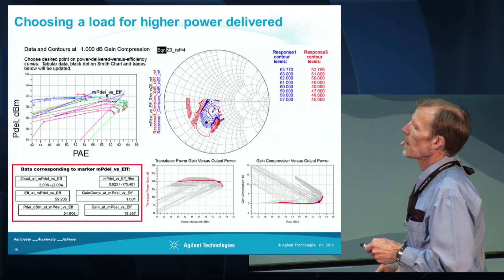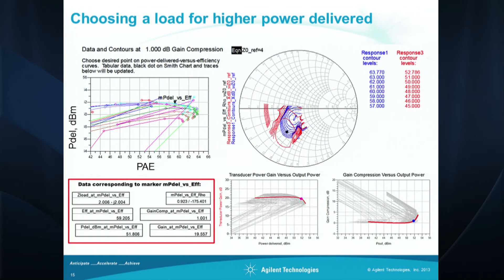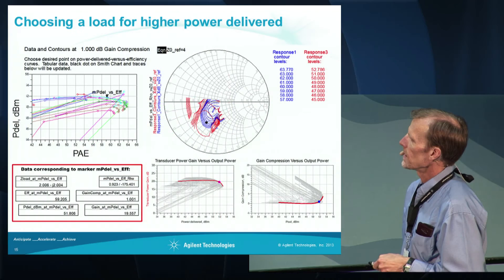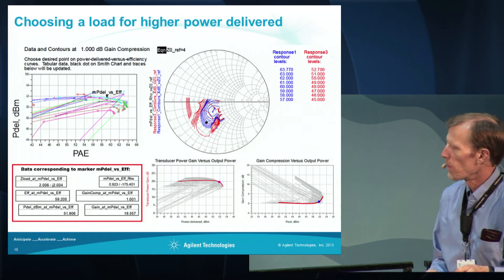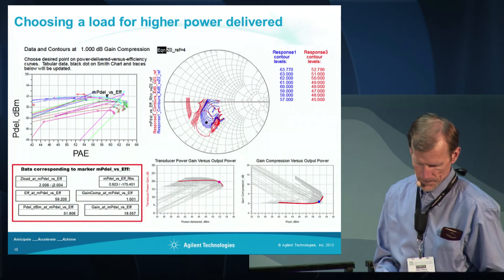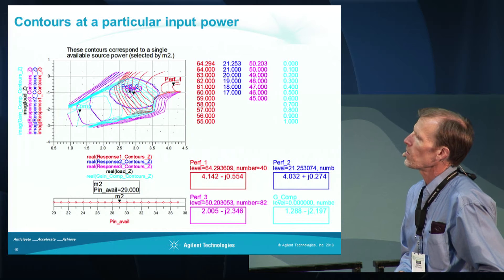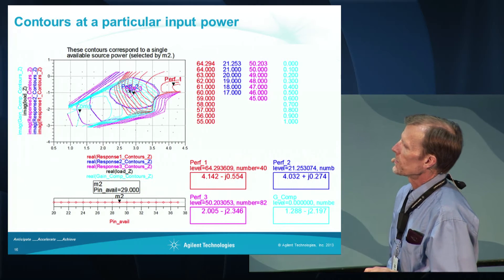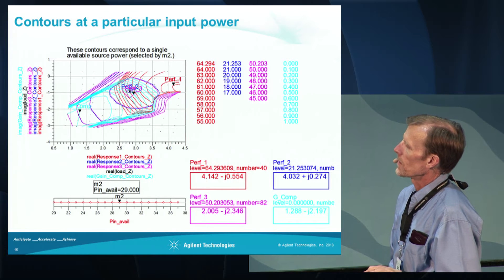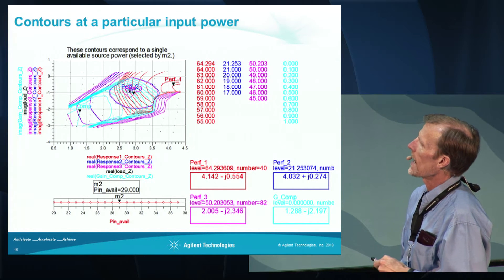Here we've chosen a load that gives higher output power — still at the 1 dB compression point. We see a different result; you can see that the output power is higher. So you can see there's a definite trade-off. We're at higher power but slightly lower efficiency. We can also look at the contours at a particular input power level. We can select one of the input powers and plot the contours for efficiency, gain, output power, and gain compression.